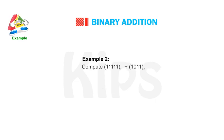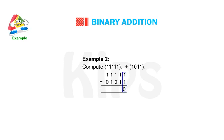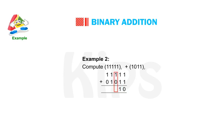Example 2: Compute binary 111111 plus binary 101. Following the binary addition rules with carry-over, the result is 1000100.